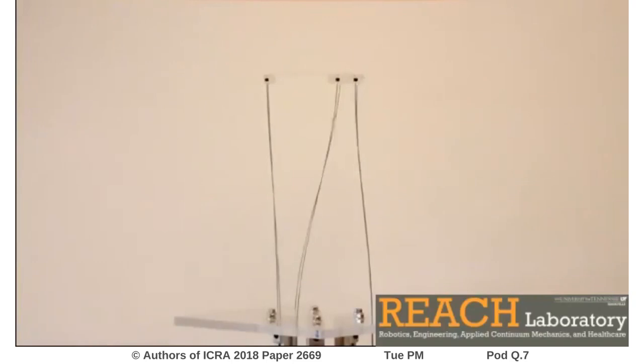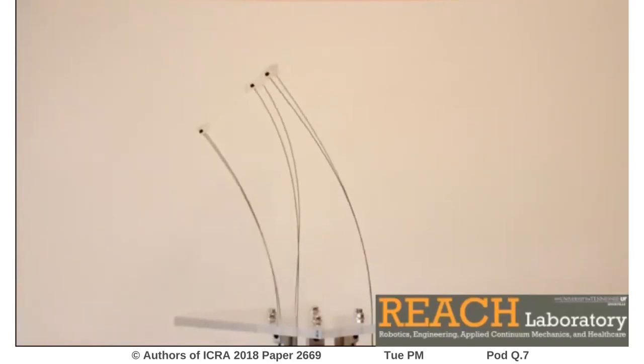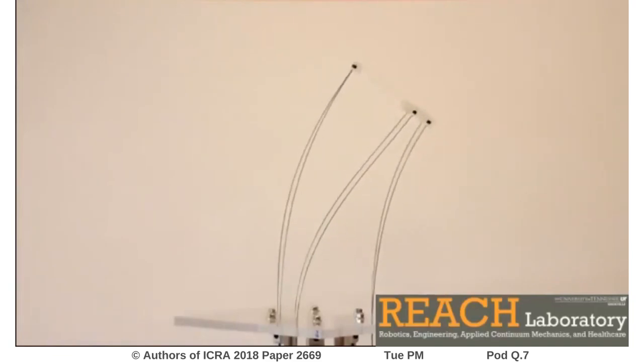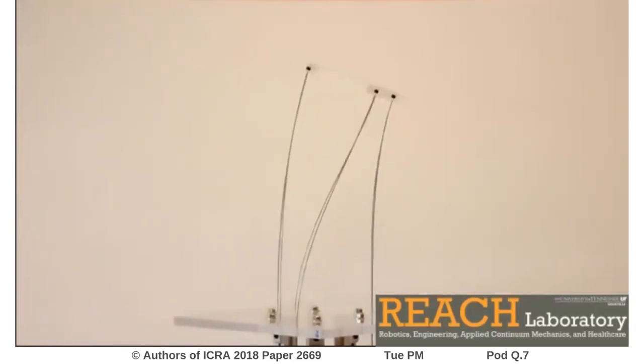Continuum robots are defined by their ability to achieve movement through controlled deformation of a continuous elastic structure. For example, this parallel continuum robot uses six flexible rods attached to independent linear actuators, which are coupled together to achieve 6-DOF control of the end-effector.